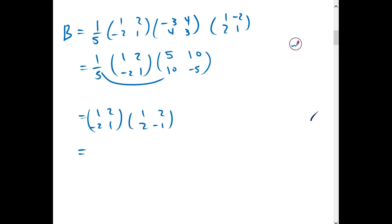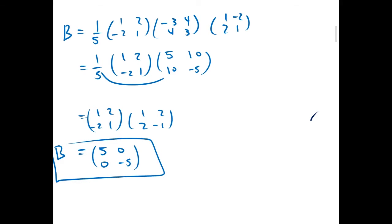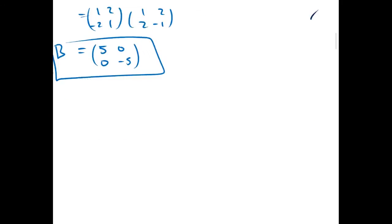Then multiplying these together, we get [5,0; 0,-5]. So B equals [5,0; 0,-5].